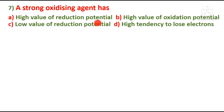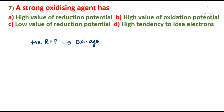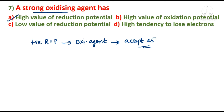Which statement is correct: a strong oxidizing agent has a high value of reduction potential, a high value of oxidation potential, a low value of reduction potential, or a high tendency to lose electrons? According to the electrochemical series, a metal with a high positive reduction potential acts as a very good oxidizing agent — it can accept electrons. So option A, high value of reduction potential, is correct.